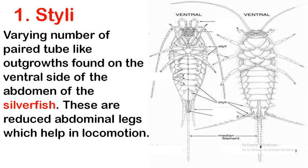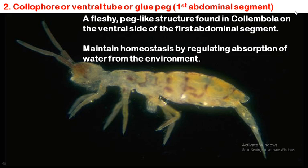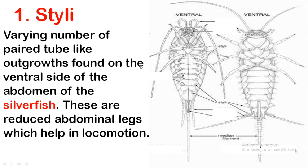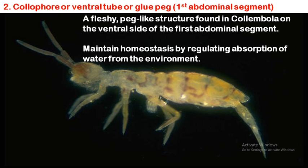In the case of silverfish, on the lower side of the body, on the abdominal sternum, there are small tube-like outgrowths found on the ventral side. These are present on the ventral side of the abdomen of the silverfish and they help in locomotion. These are called styli.